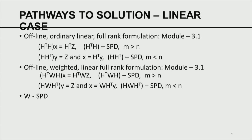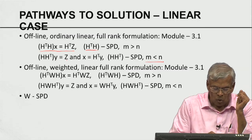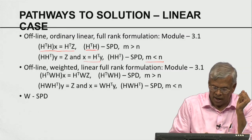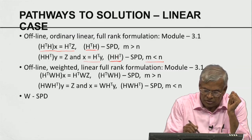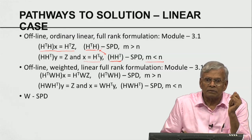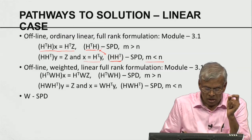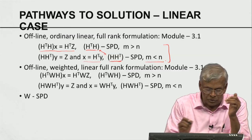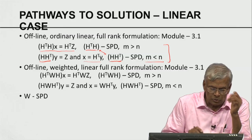In the linear case — offline ordinary linear full rank formulation from module 3.1 — we are called upon to solve H^T H x = H^T z, where H^T H is a symmetric positive definite matrix when m > n (over-determined case). In the under-determined case when m < n, we solve H H^T y = z, then obtain the least square solution as H^T y. Both H H^T and H^T H are Gramian matrices, which are symmetric and positive definite when H is full rank.